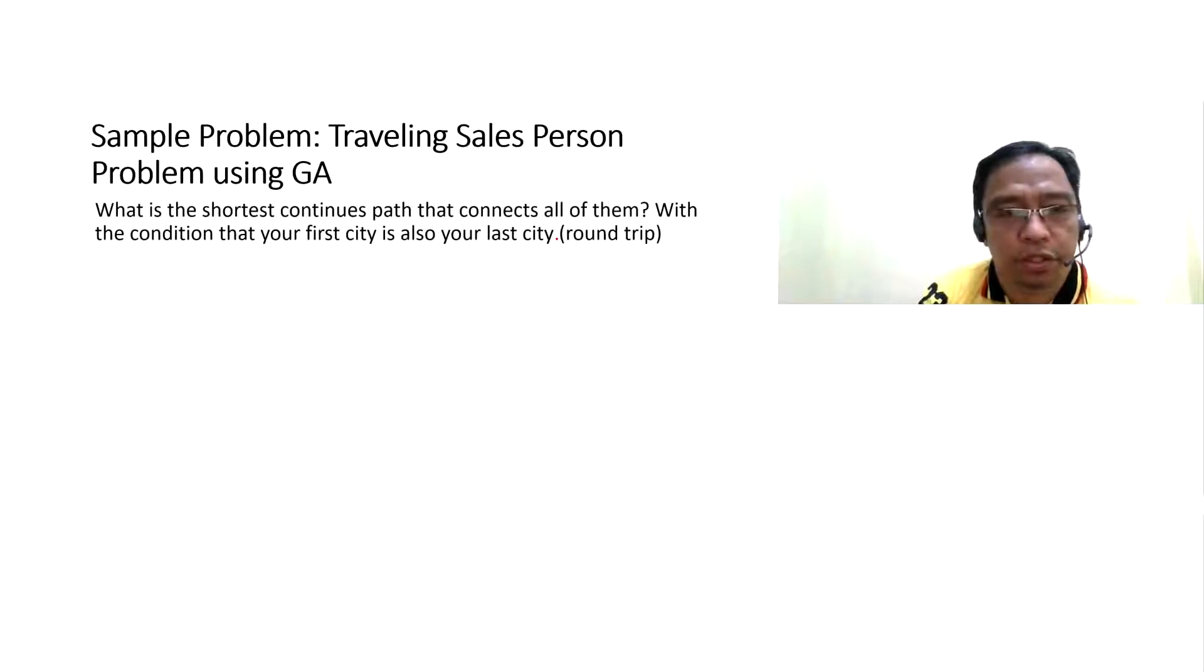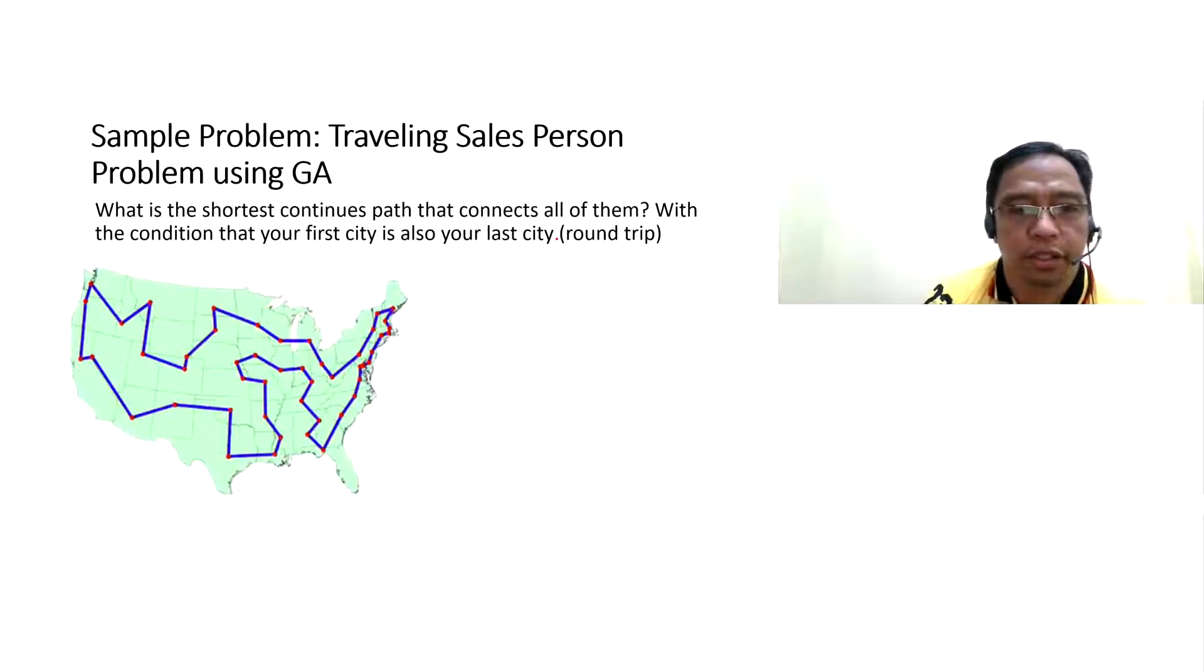Sample problem: traveling salesperson using genetic algorithm. What is the shortest continuous path that connects all of them with the condition that the first city is your last city or round trip with these routes?